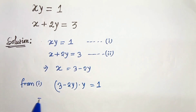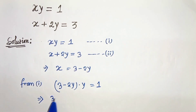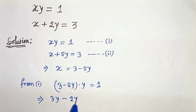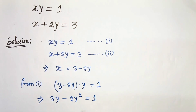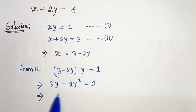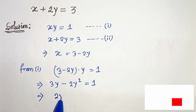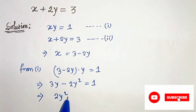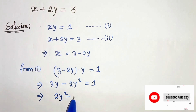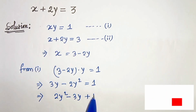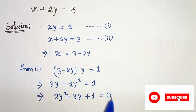Now let's simplify this. We will get 3y minus 2y² equals 1. In the next step we can write 2y² minus 3y plus 1 equals 0.